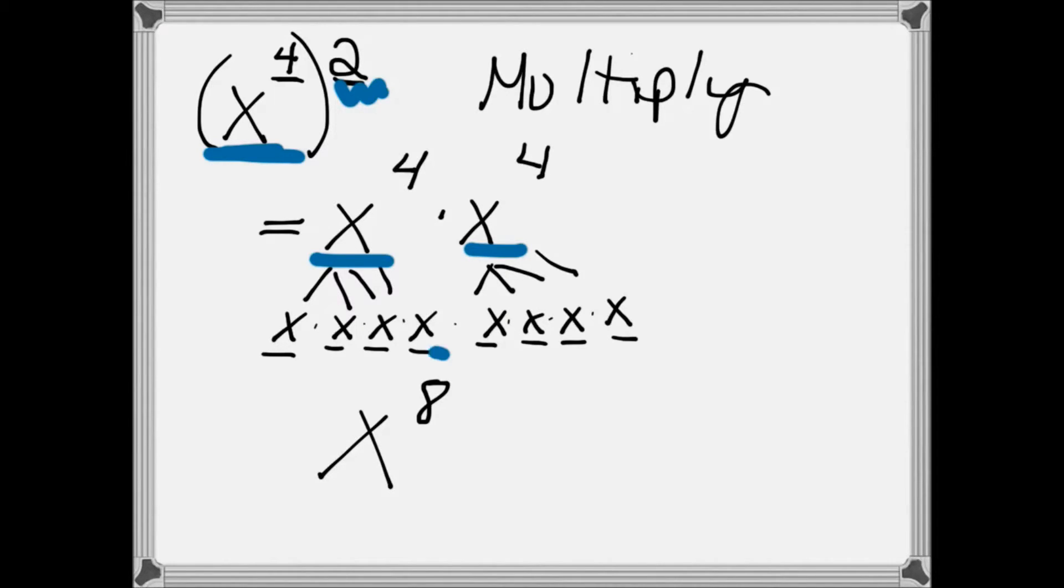For the first one, we have x times x times x times x, and for the second one, we have x times x times x times x. We have x to the 4th twice. When we count how many times x is being multiplied by itself, we get a total of 8.